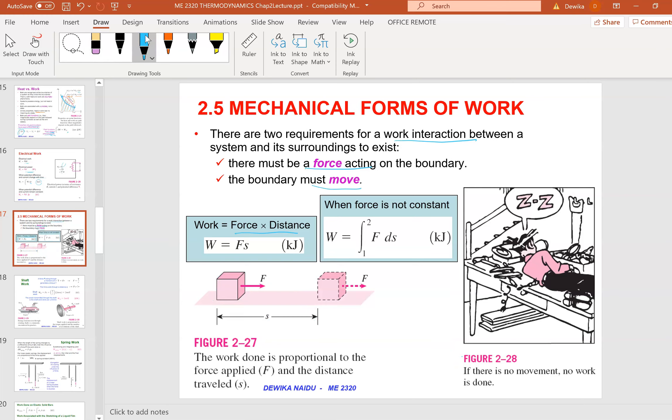Work equals force times distance. Now in some cases you may not have a constant value. So we have integration from point 1 to point 2. The work is proportional to the force applied and the distance traveled.